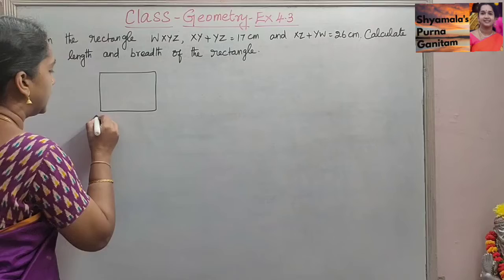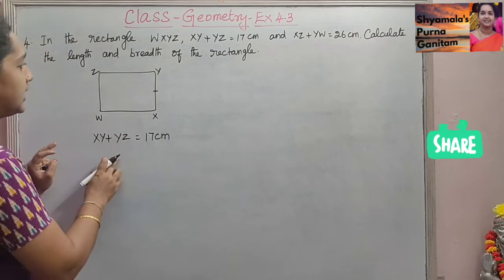In the rectangle WXYZ, so we take a rectangle, the vertices are given as WXYZ. In this, XY plus YZ, XY plus YZ is equal to 17 cm given. That is XY, this side and YZ. If we add these two, the length is given as 17 cm.